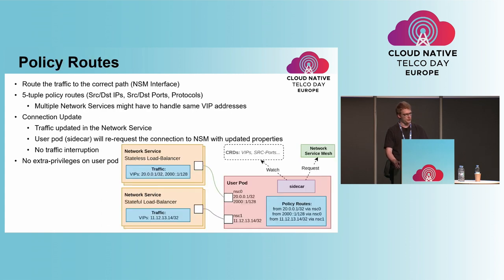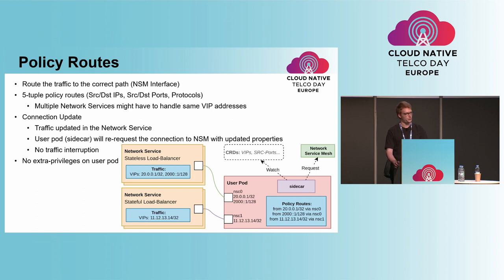Finally, the last main design extension is about policy routing. The default routes in a Kubernetes pod point toward the primary network interface. User pods might also want to connect to multiple network services at the same time that are handling the same VIP address but with a different protocol. The outgoing traffic then has to be routed via NSM policies. Policy routes are added based on the network service configuration: as part of the request to NSM, the sidecar container specifies the routing policies. If the network service is updated, the sidecar updates the connection via a new request to NSM, and NSM updates the connection and the policy route inside the pod with no traffic interruption.